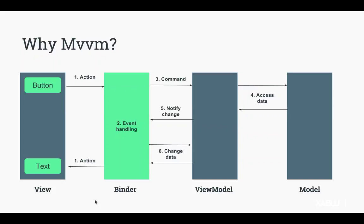When you're using MvvmCross native, you separate the view from the view model in your logic. The view is platform-specific while the view model and the models are shared across platforms. Other techniques in MVVM could be file linking, shared code projects using #if and #endif, or portable class libraries. MvvmCross itself is of course built on portable class libraries.